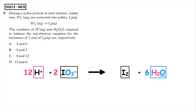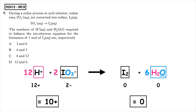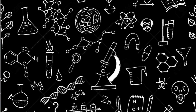For the overall charge: hydrogen ions give 12 plus; the iodate has a charge of two minus, giving an overall charge of 10 positive on the left-hand side. The iodine doesn't have a charge, and water is zero, so the overall charge on the right is zero. The left-hand side has the higher charge, so that's where we put the electrons. We have to add 10 electrons to balance that out. The correct answer is multiple choice D.